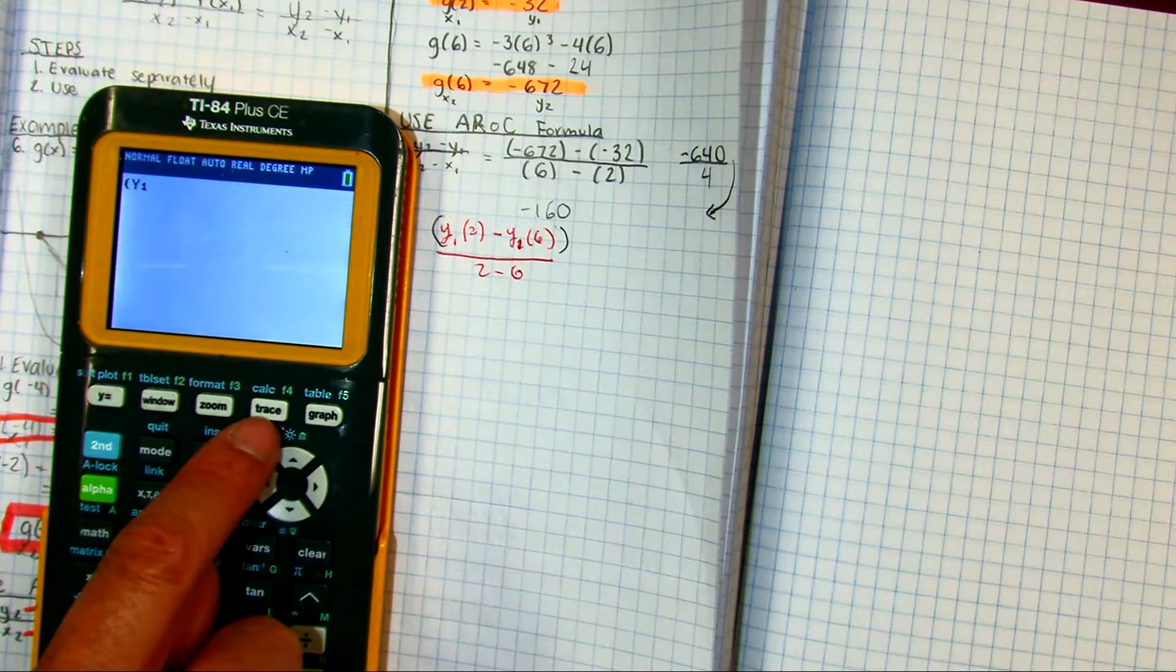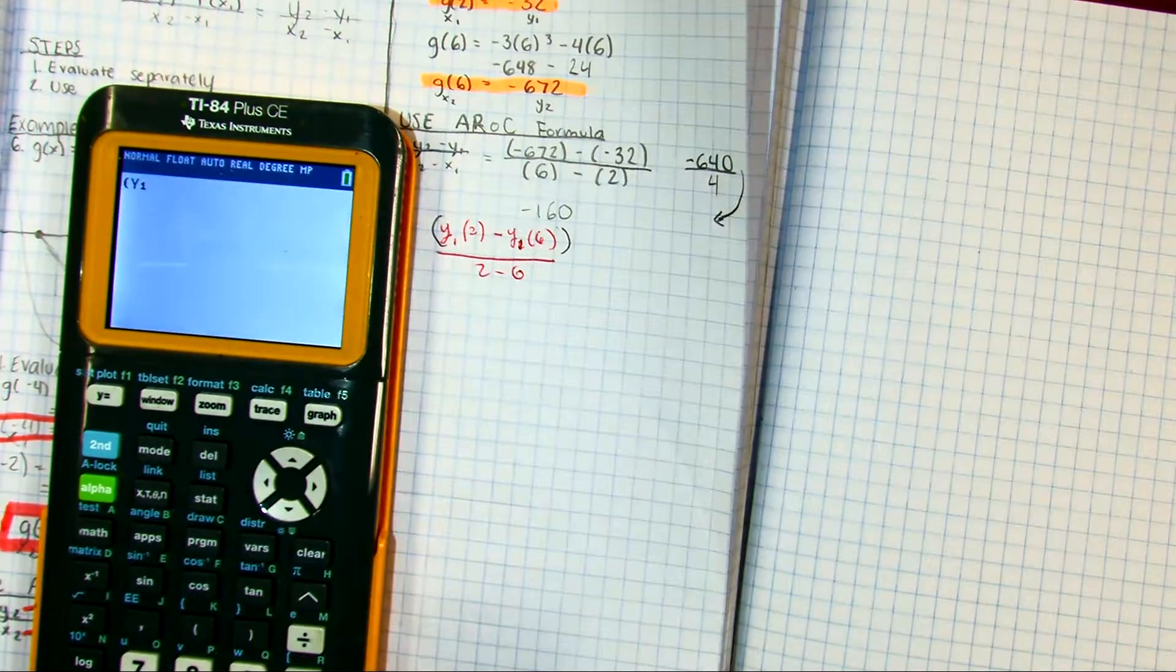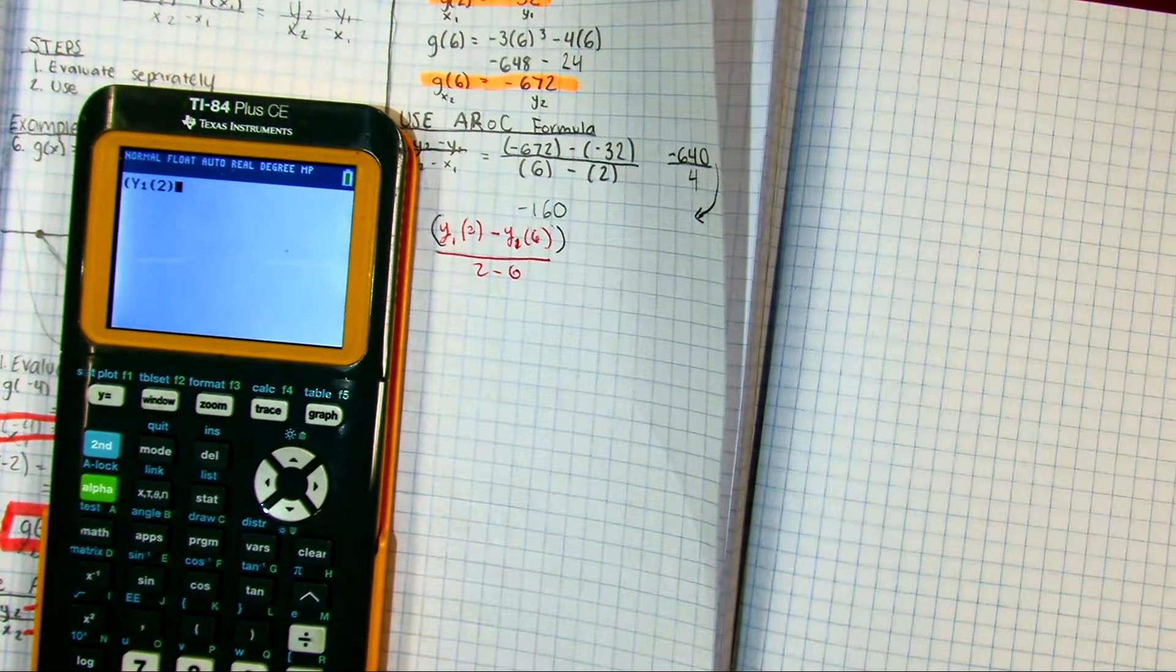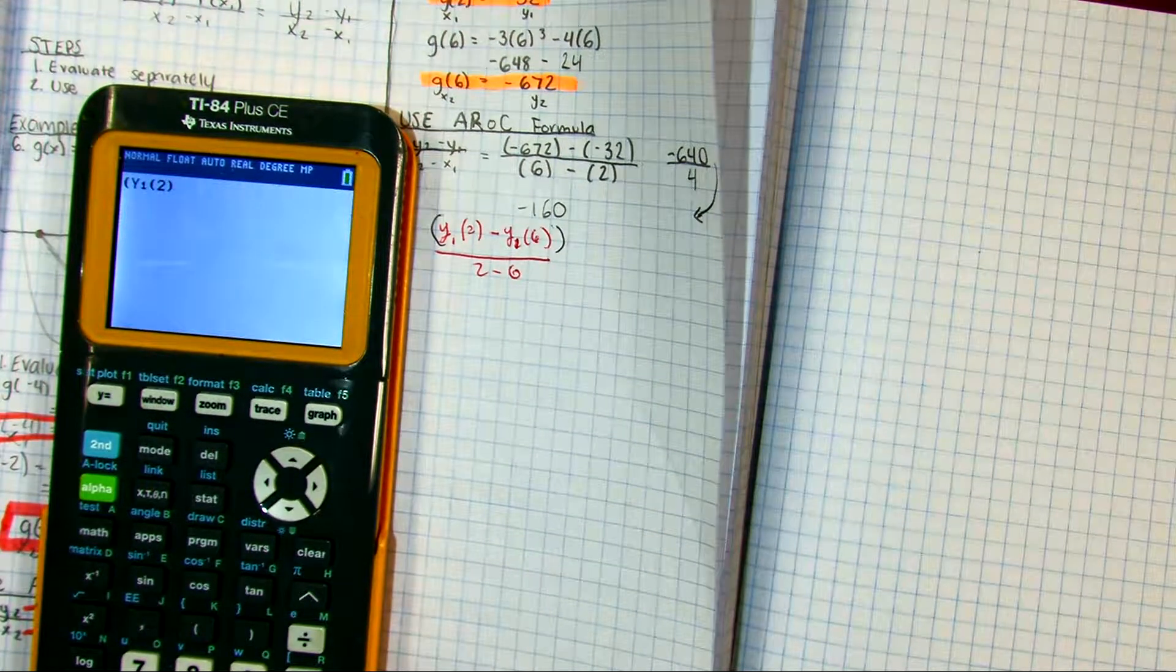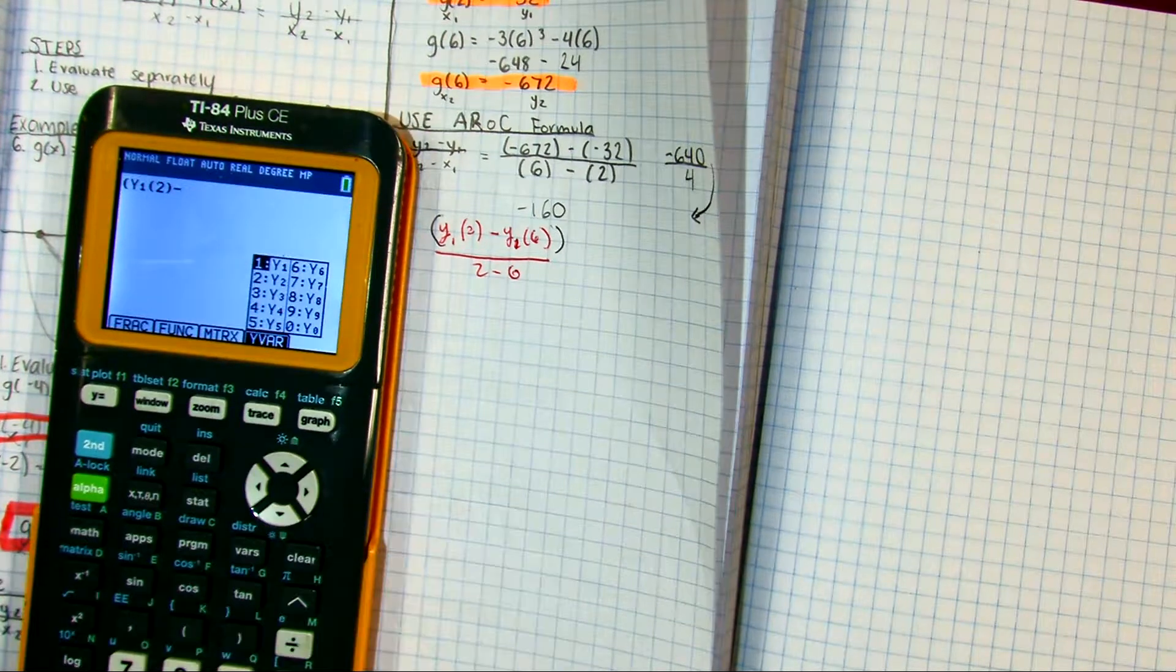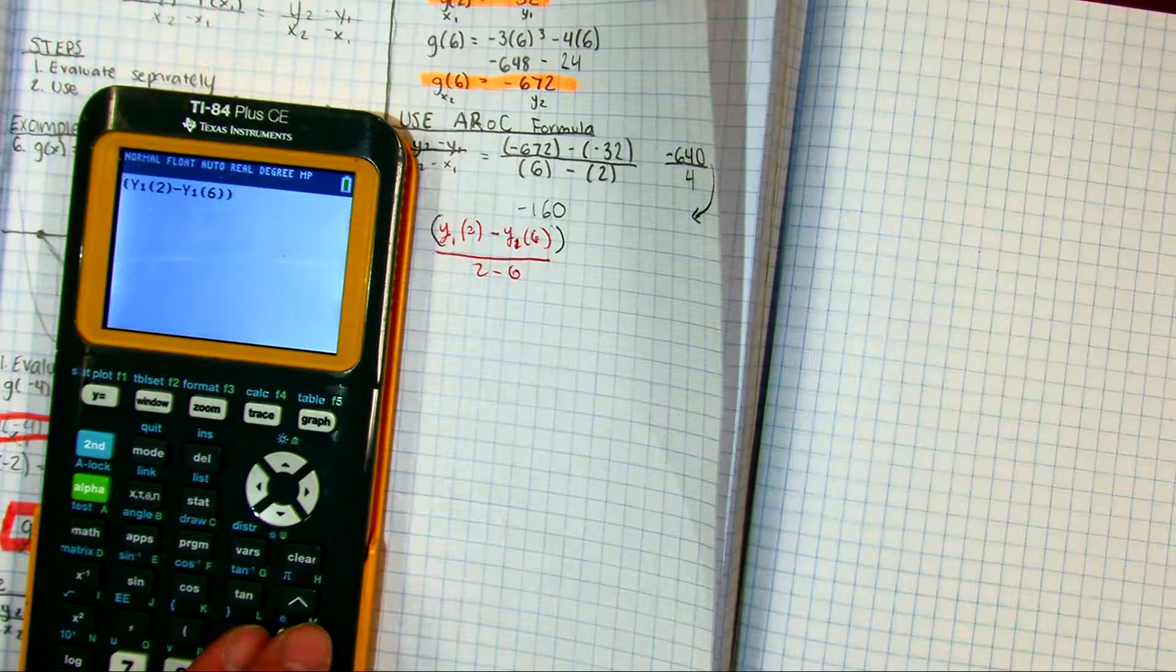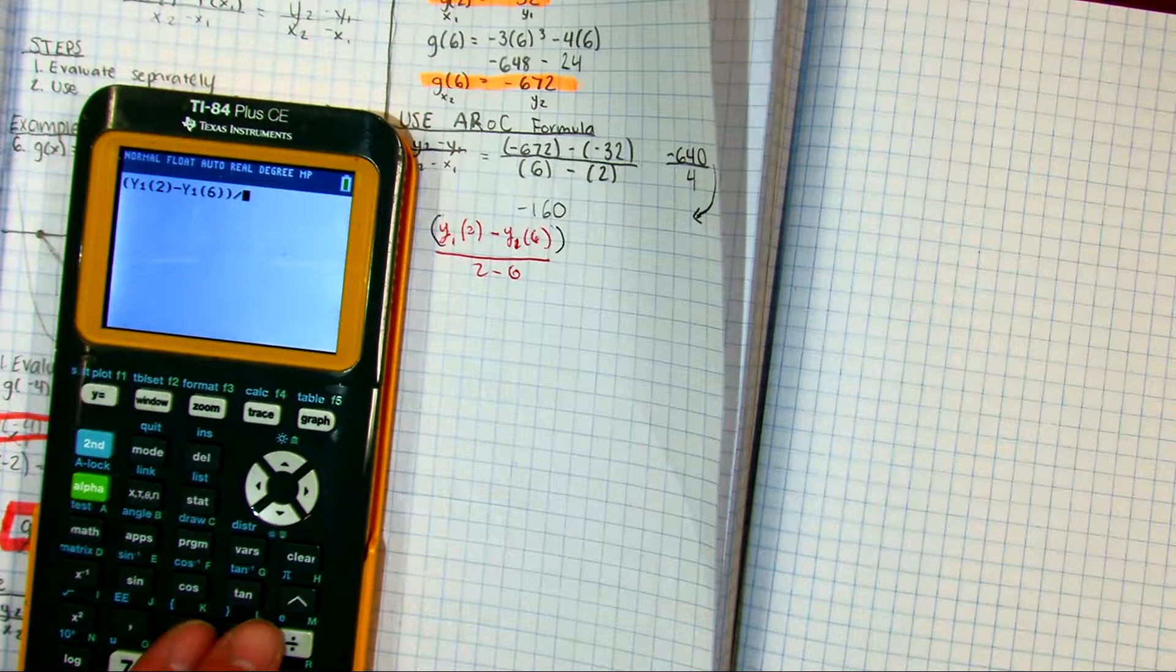Trace is up here. And then I'm just going to put parenthesis 2. And then do the same thing. Alpha trace. And then I'm going to divide that by 2 minus 6.